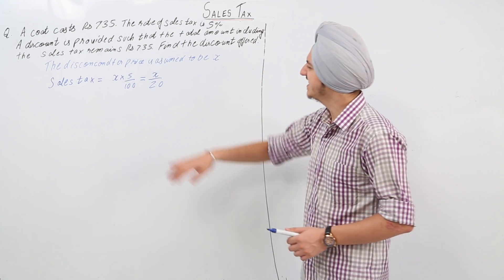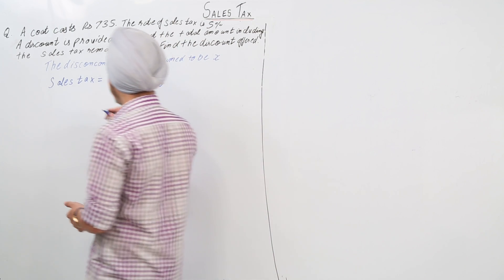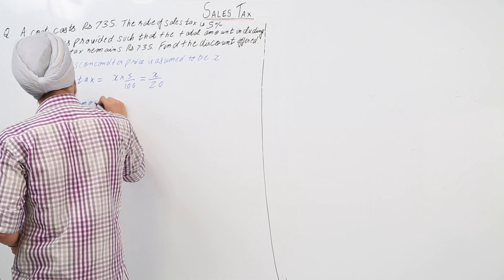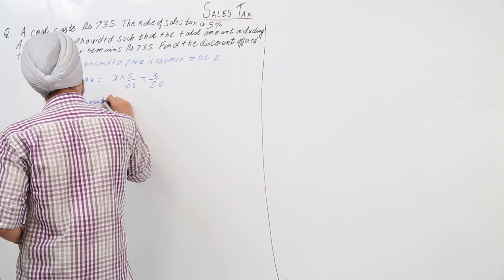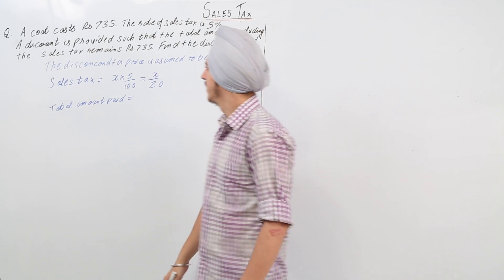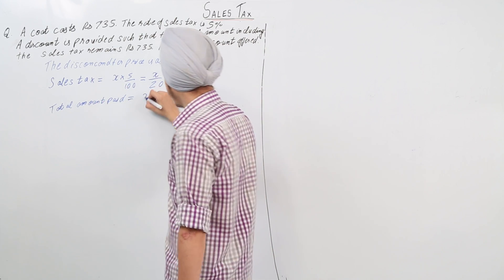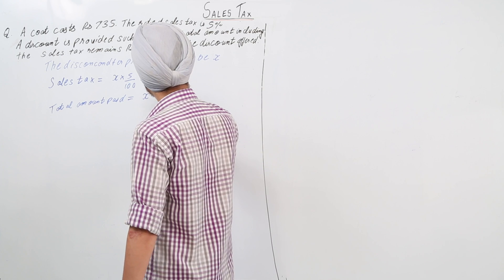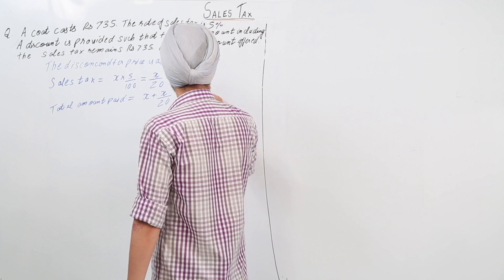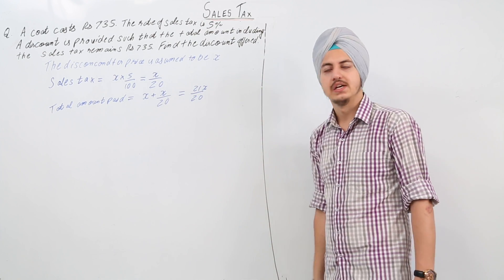The sales tax is equal to x by 20. The total amount paid will be equal to the selling price plus the sales tax, that is equal to x plus x by 20, which is equal to 21x by 20, or 21 upon 20 into x.